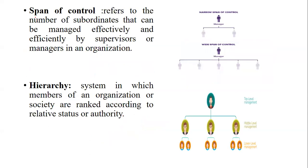The next option is span of control. It refers to the number of subordinates that can be managed effectively and efficiently by supervisors. In an organization, a manager has a number of subordinates.